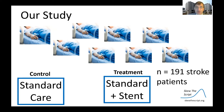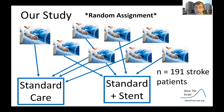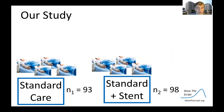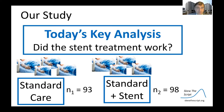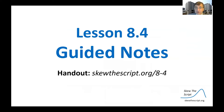In our study, we took 191 patients with stroke and randomly assigned them to standard medical care with TPA, or to extra care — TPA plus our experimental stent treatment. By computer, they were randomly sorted into these two treatment groups. We ended up with 93 patients receiving standard care and 98 receiving the stent, and measured which group had lower mean disability scores three months after the stroke. If you'd like to follow along, this is available at this website.